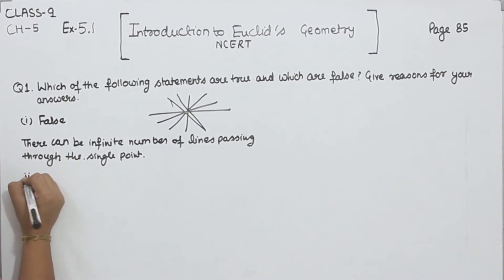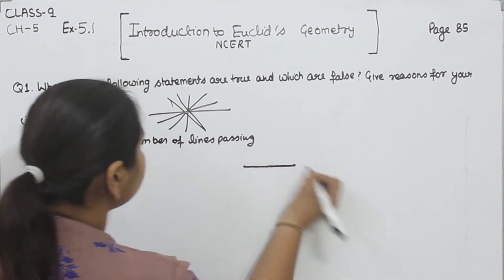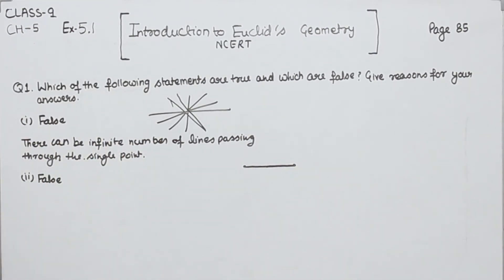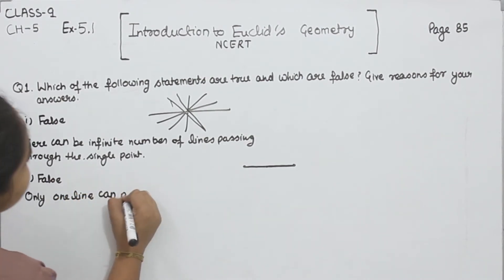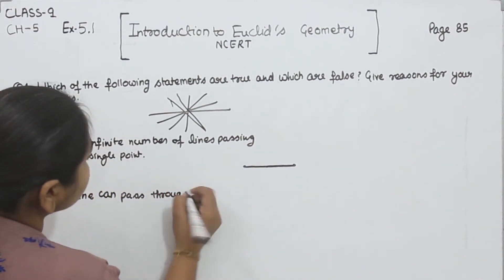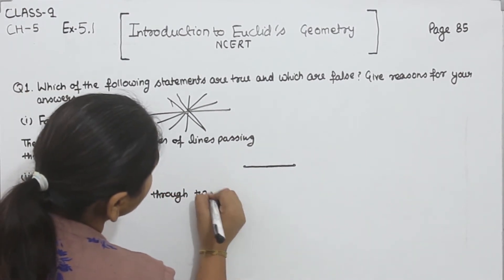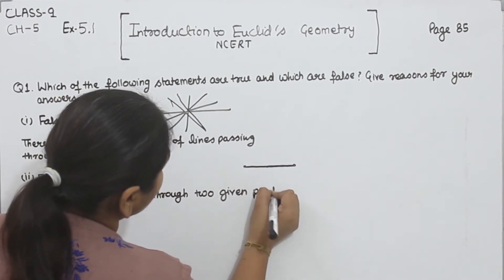From two points, only a single line can pass. These are the points. Only a single line can pass through these two points. Only one line can pass through two given points.